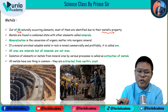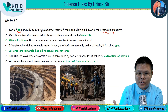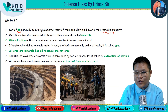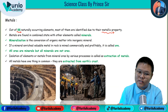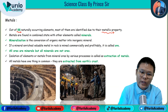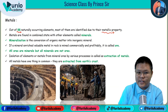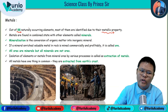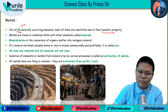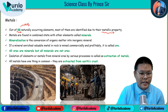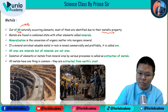Among those 88 naturally occurring elements, most are identified by their metallic property. Metals are found in a combined state with other elements, and this combined form is called minerals. So metals plus other elements equals minerals — remember this concept.